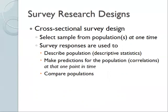Next we'll talk about research design — the plan for conducting a research project. There are three general types of survey research designs. The first is cross-sectional design, where you take a sample from a population at the same time. For example, taking a random sample of students in 2021, you might describe the population using descriptive statistics, make predictions using correlation, or compare populations — but you can't assess change over time.